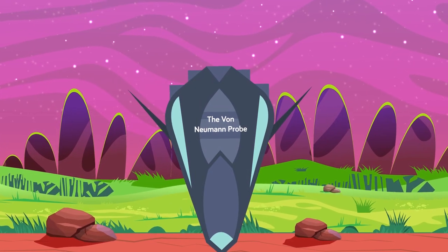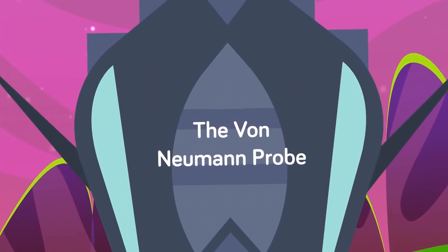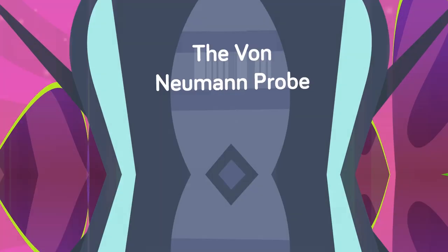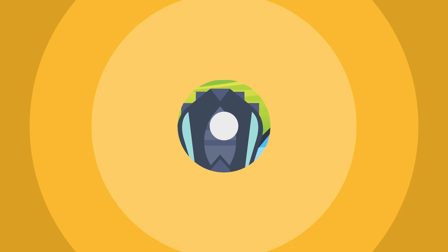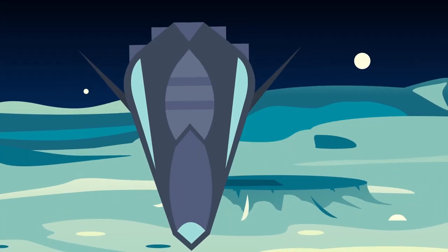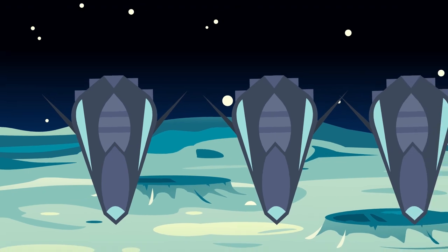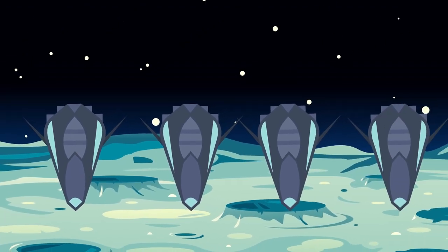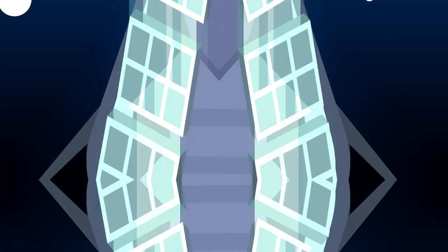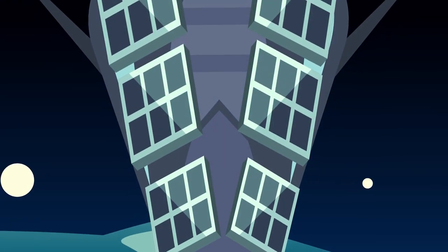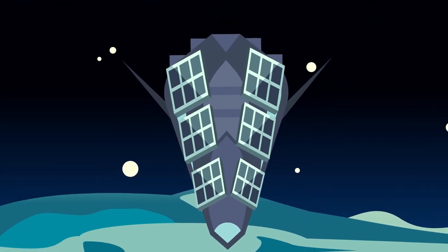A special type of probe, called a von Neumann probe, could in fact be programmed to set up an entire mining operation and ship resources back home all on its own. It would accomplish this by first landing and then immediately replicating itself. The copy would then copy itself, and that copy would copy itself, and on and on until you have a whole army of probes all from one original. These probes would be so efficient it was calculated that as long as raw materials were available, one probe could end up encasing the entire sun in solar panels in as little as a century. That's quite the feat.